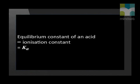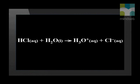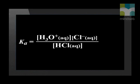The equilibrium constant of an acid is called the ionization constant of an acid. It is represented by the symbol Ka. Let us write the ionization constant of a strong acid. From this acid-base equilibrium reaction, a dilute hydrochloric acid ionizes completely in water to form a hydronium ion and a chloride ion. The ionization constant of hydrochloric acid is given as the concentration of the hydronium ion multiplied by the concentration of the chloride ion divided by the concentration of hydrochloric acid. Water does not form part of the expression.